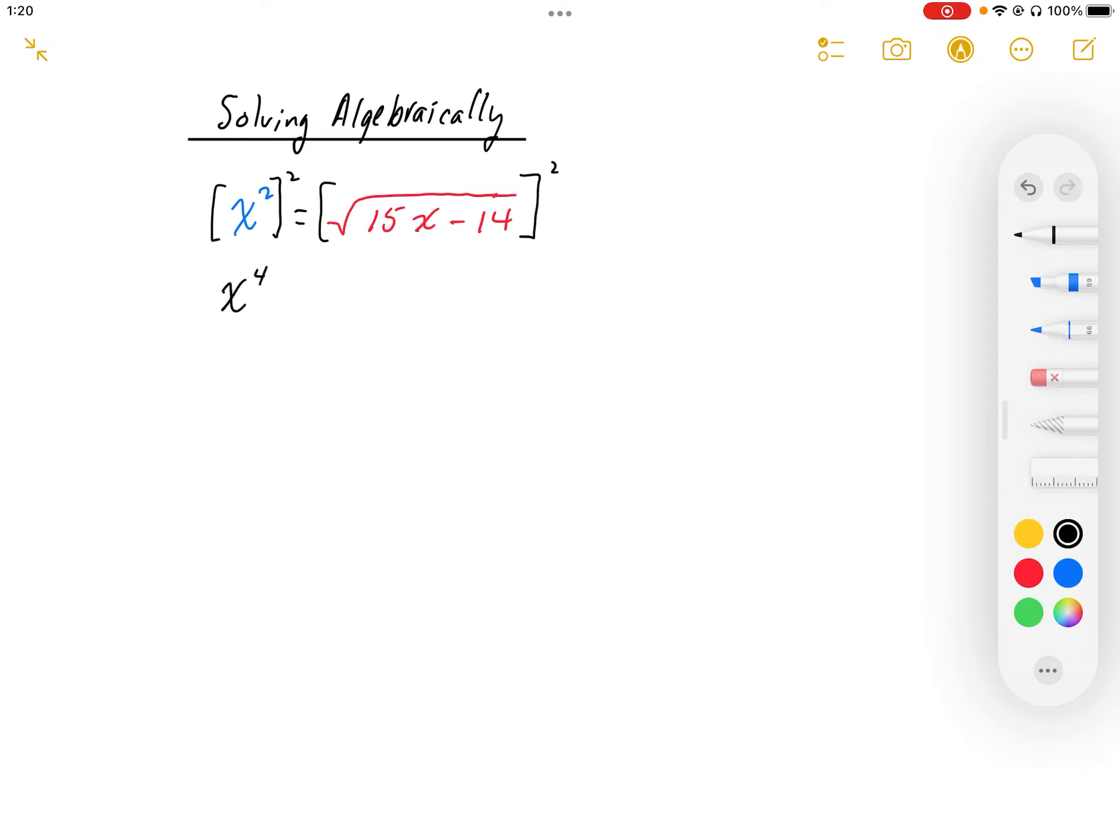So I end up with x to the power 4 is equal to 15x minus 14. This is a polynomial equation, so we're going to make it equal to zero.